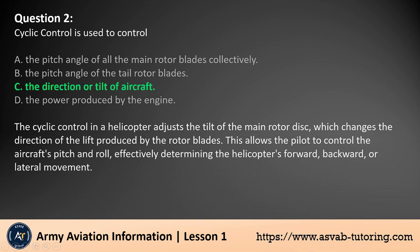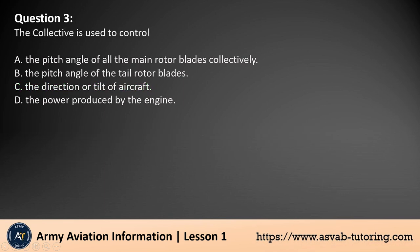The cyclic control in a helicopter adjusts the tilt of the main rotor disc, which changes the direction of the lift produced by the rotor blades. This allows the pilot to control the aircraft's pitch and roll, effectively determining the helicopter's forward, backward, or lateral movement.